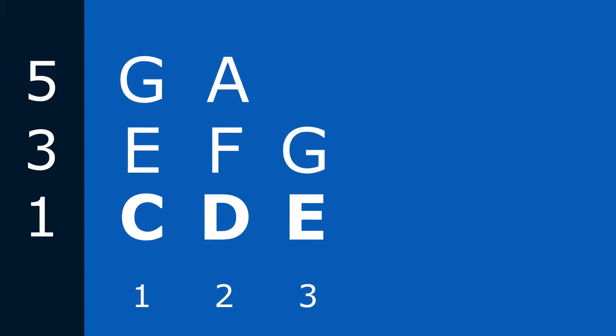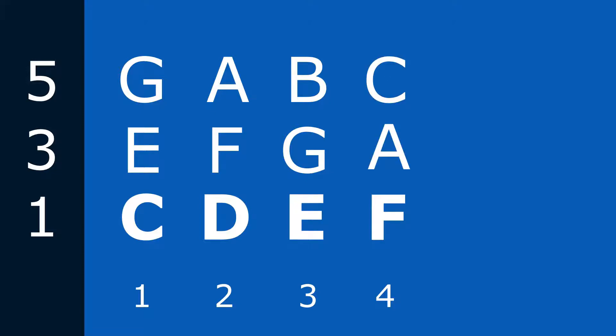So again, a little review. To build any triad, we need a 1, 3, 5 — these are the letters we're talking about. And for this one, we're only building chords from one scale. So the first scale degree in the key of C is C, and we need a 1, 3, 5 from there: C, E, G — we get that C major chord. Then the second scale degree is D: D, F, A — D minor. The third scale degree is E: E, G, B — E minor is the three chord. The fourth scale degree is F: F, A, C — F major is the four chord.